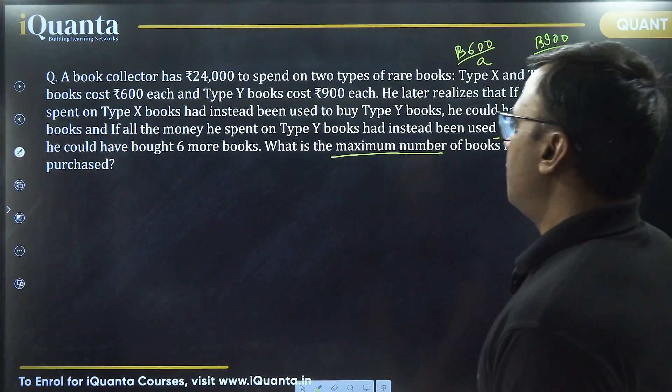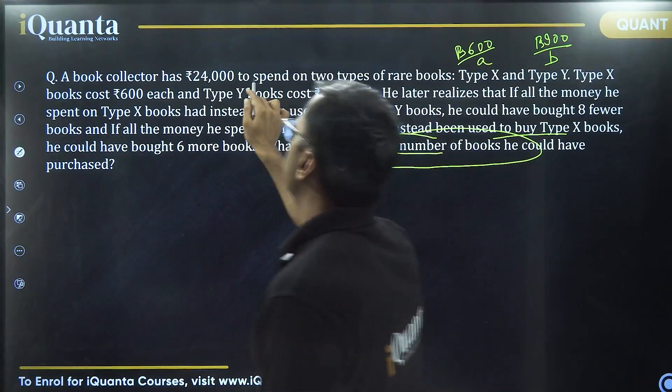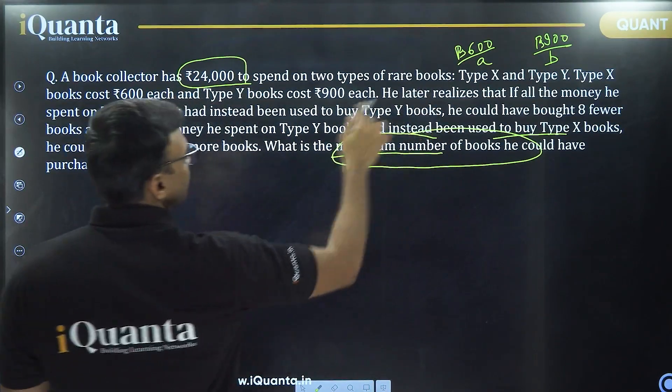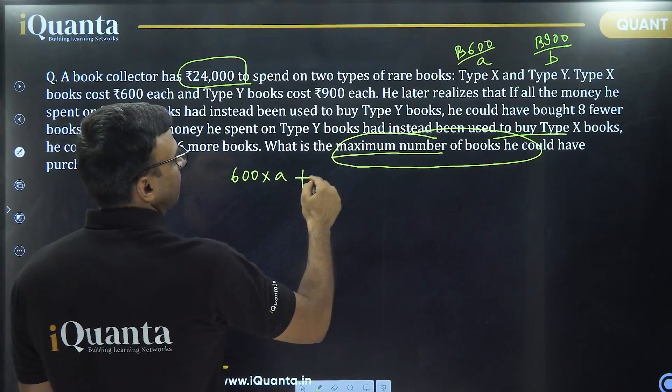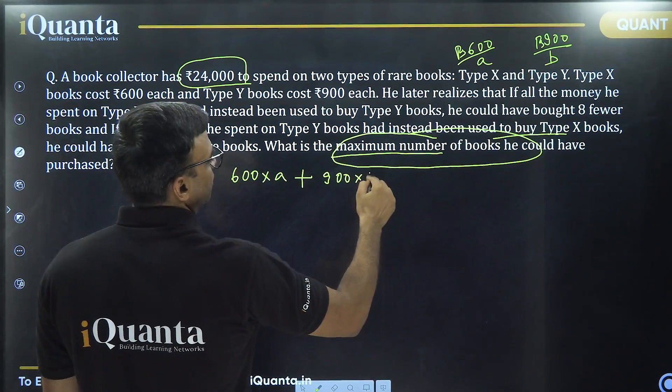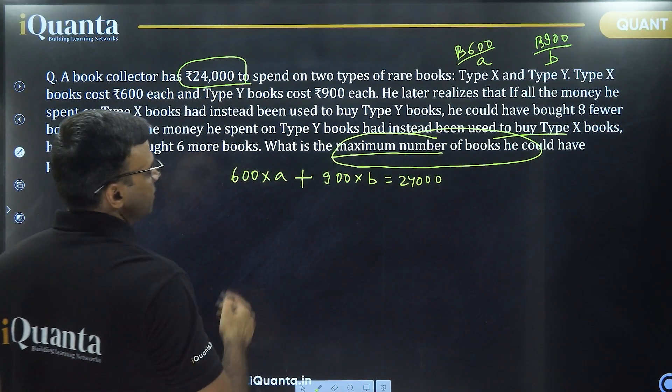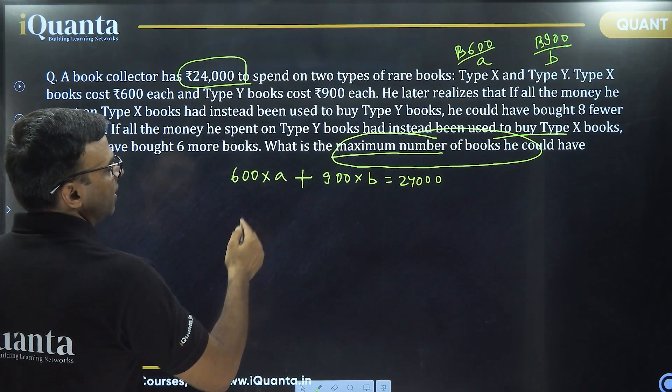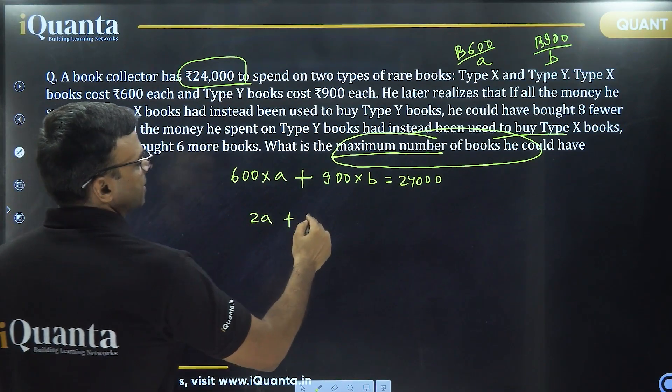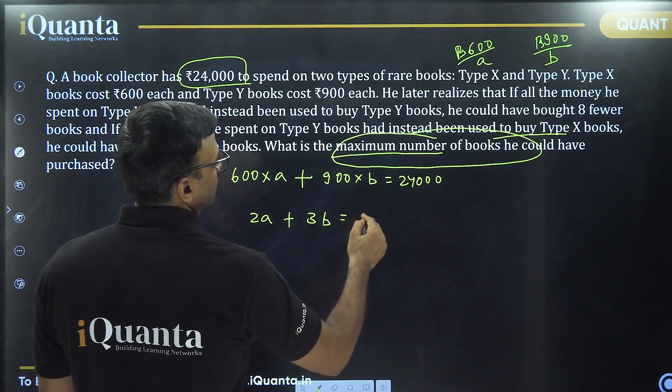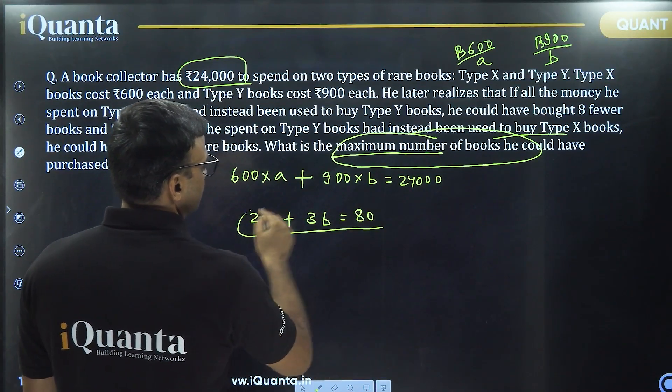Let's assume for maximum number of books, he's spending the entire amount. That means 600 into A, the total price of type X books, plus 900 into B, the total price of type Y books, should equal 24,000. Cancel zeros, divide by 200, in fact divide by 300. So this becomes 2A plus 3B is equal to, divided by 300, so it is 80.